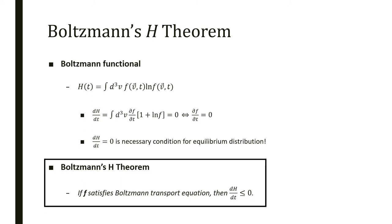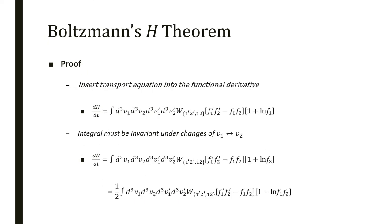Having this functional, we can now state Boltzmann's H theorem: if f satisfies the Boltzmann transport equation with all its assumptions, then dH/dt has to be lower or equal to zero. The proof is quite simple. We start by inserting the transport equation inside the functional derivative and we have an integration over all the velocities involved.